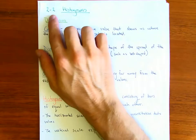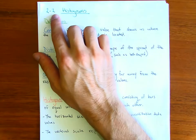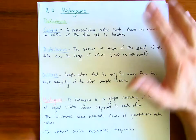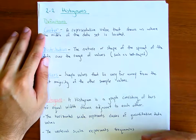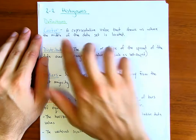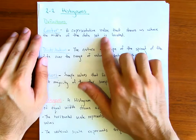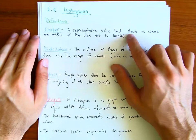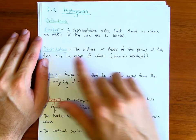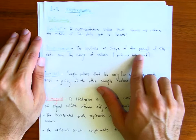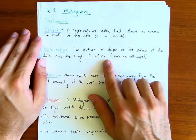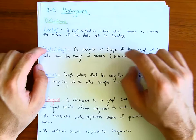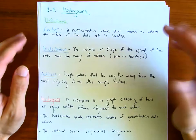Welcome everybody, let's go through chapter 2.2. We're going to be talking about histograms. Please pause the video and copy the notes down. The center of a histogram represents the value that shows us where the middle of the data is located. The distribution describes the nature and shape of the spread of the data over the range of values — this will be very important for 2.3.